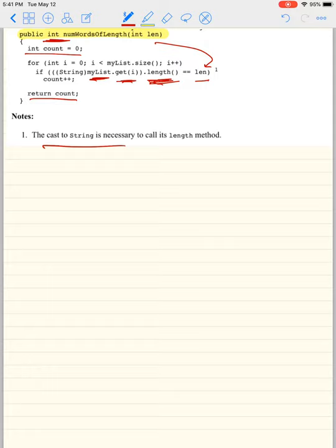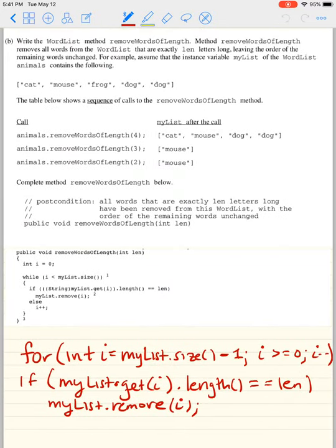Part B: Write the WordList method removeWordsOfLength. Now remember an ArrayList, you want to go backwards when you're removing something. Method removeWordsOfLength removes all the words from the WordList that are exactly length letters long.